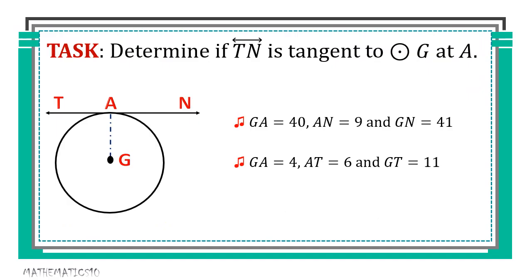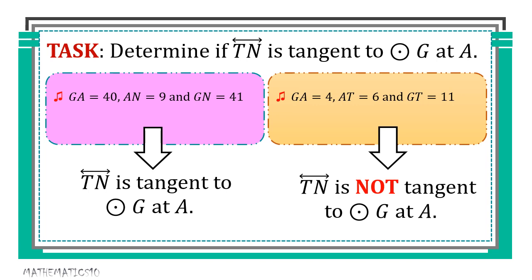For our practice exercise for theorem 102: determine if line TN is tangent to circle G at A given two different scenarios. For scenario 1, line TN is tangent to circle G at A based on the given details. For scenario 2, with GA equals 4, AT equals 6, and GT equals 11, we conclude that line TN is not tangent to circle G at A. That's it for this video. Thank you so much for watching. God bless everyone.